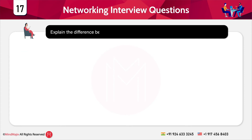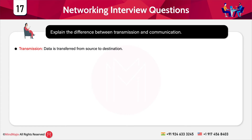The next question is: explain the difference between transmission and communication. Transmission is when data is transferred from source to destination — this involves the physical movement of data. Communication involves sending and receiving data packets between source and destination. The key distinction is that transmission refers to the physical movement of data, while communication refers to the exchange of data packets.